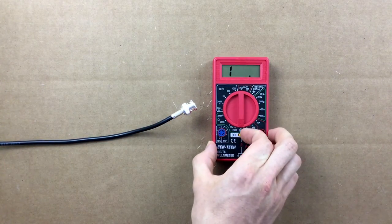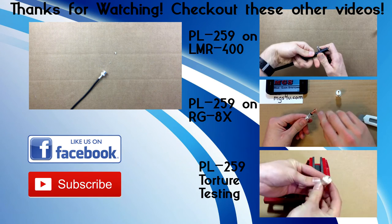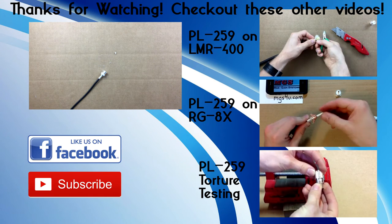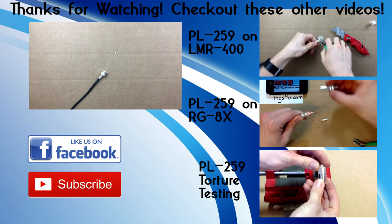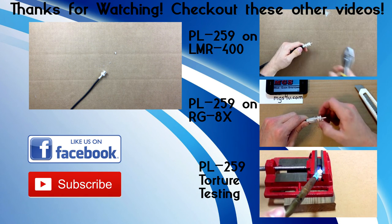Be sure to turn off your meter when done to conserve its battery. You have just completed the installation of a BNC male connector onto RG58U or Belden 8240 coaxial cable. If this video helped you, be sure to like, share, favorite, and subscribe to our channel. Thanks for watching and we'll see you in the next video.